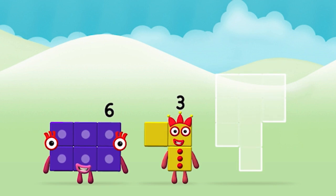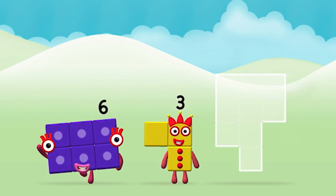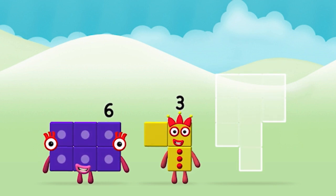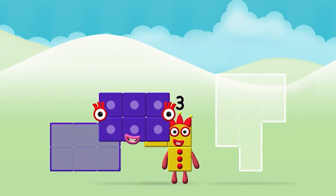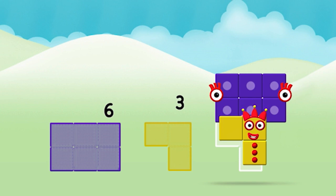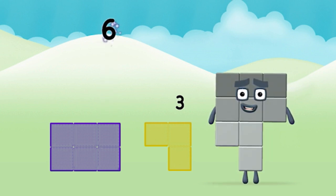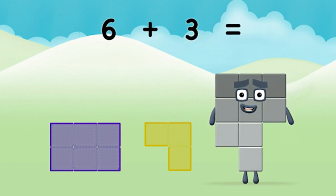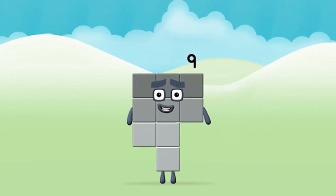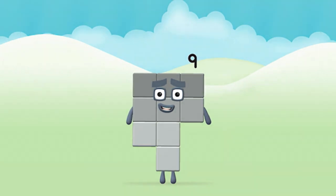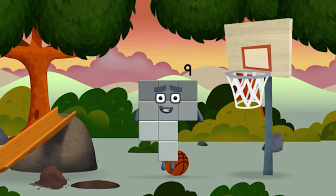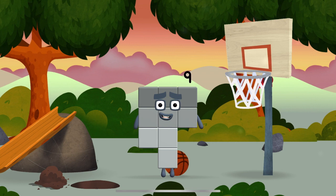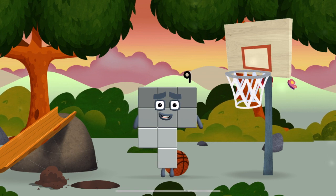Add the number blocks together. Six plus three equals nine. Marvellous! You made number block nine! You made a new number block. I am nine and I feel fine.